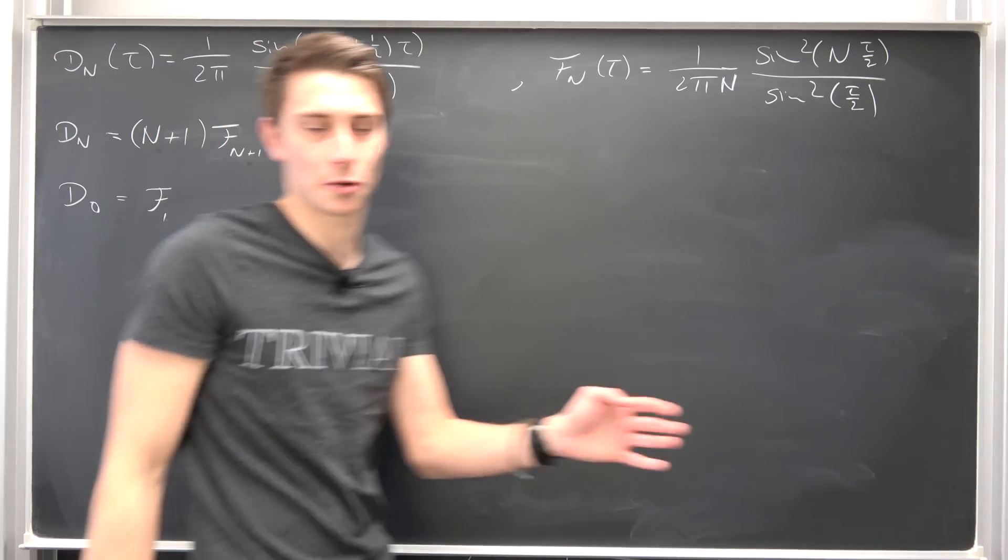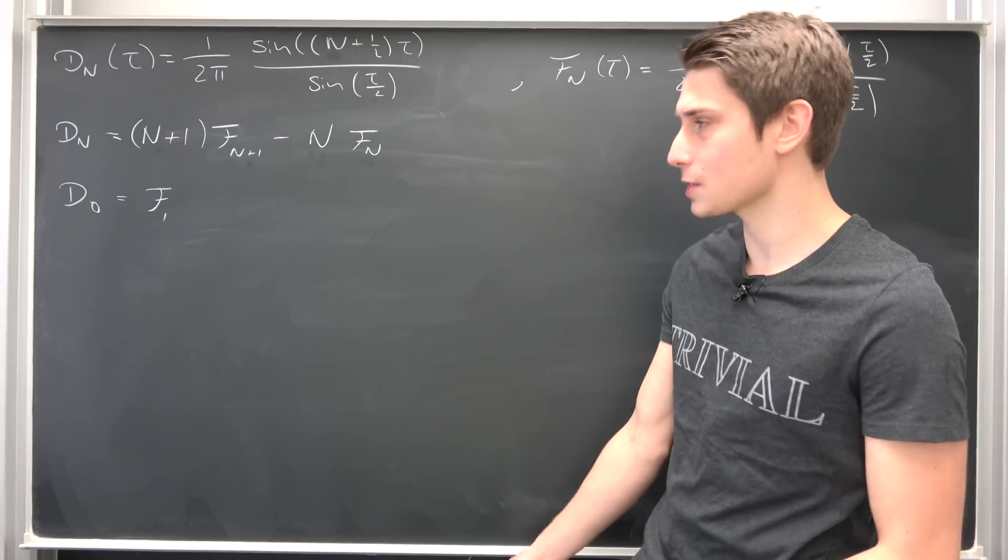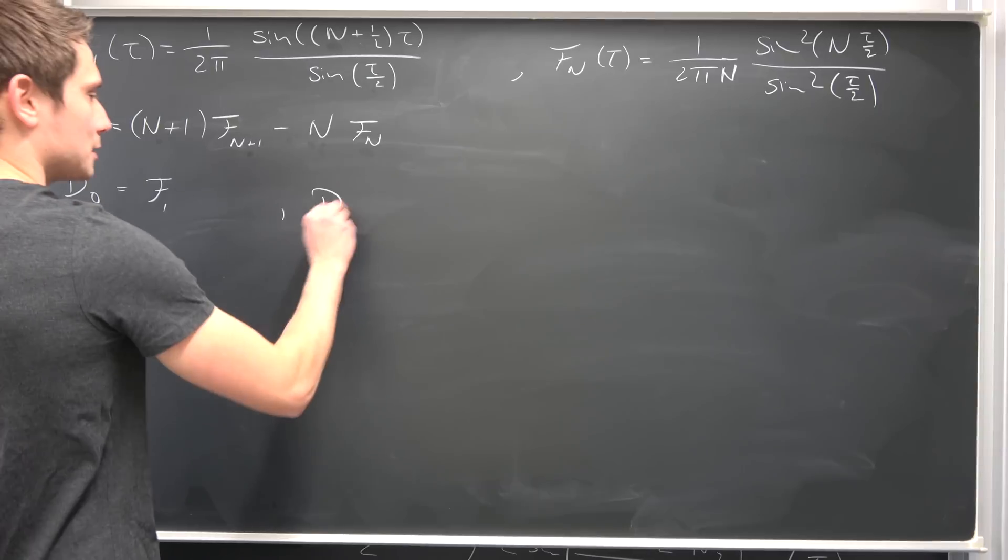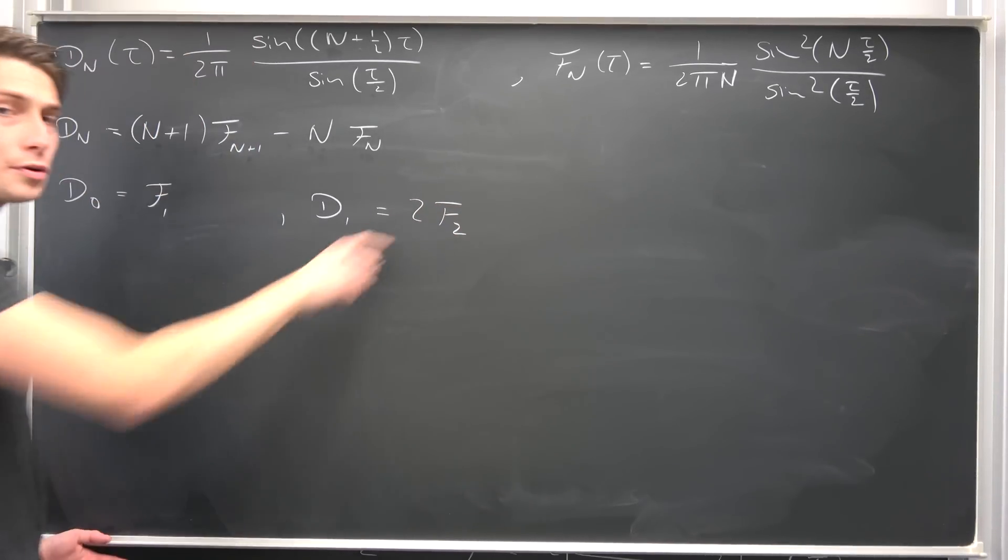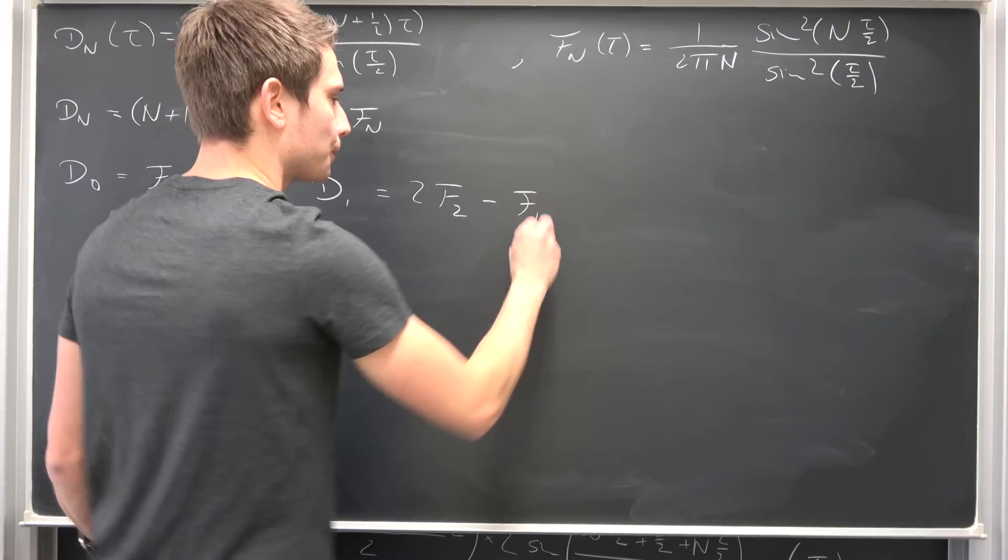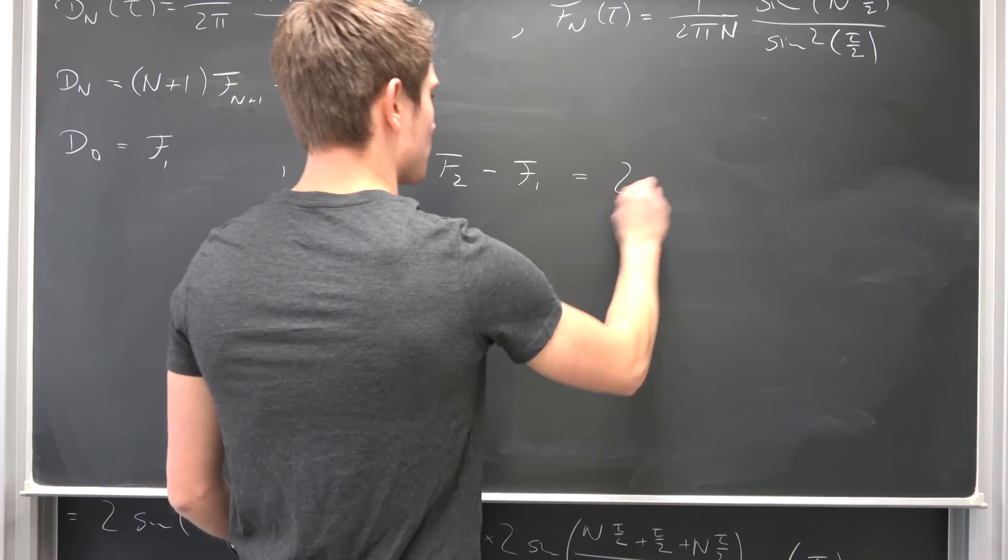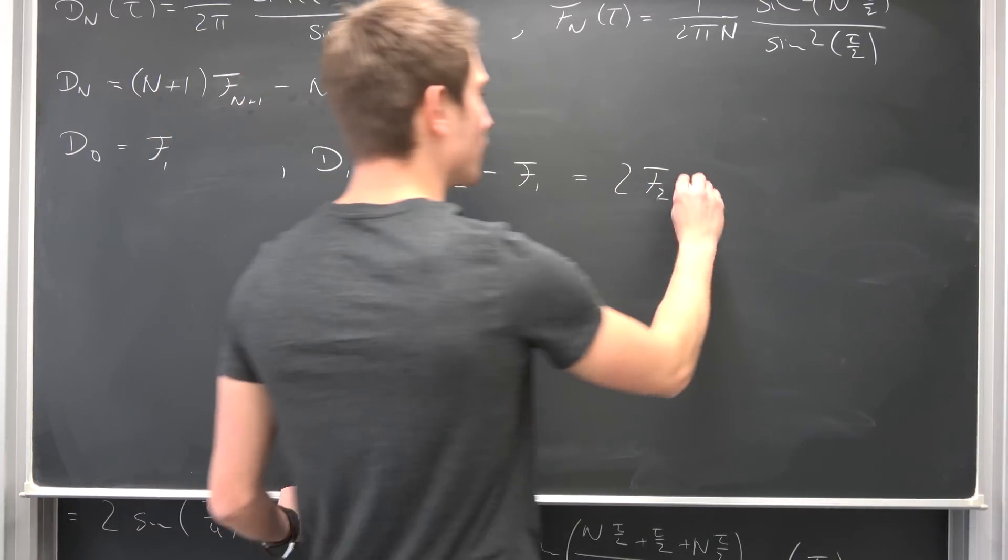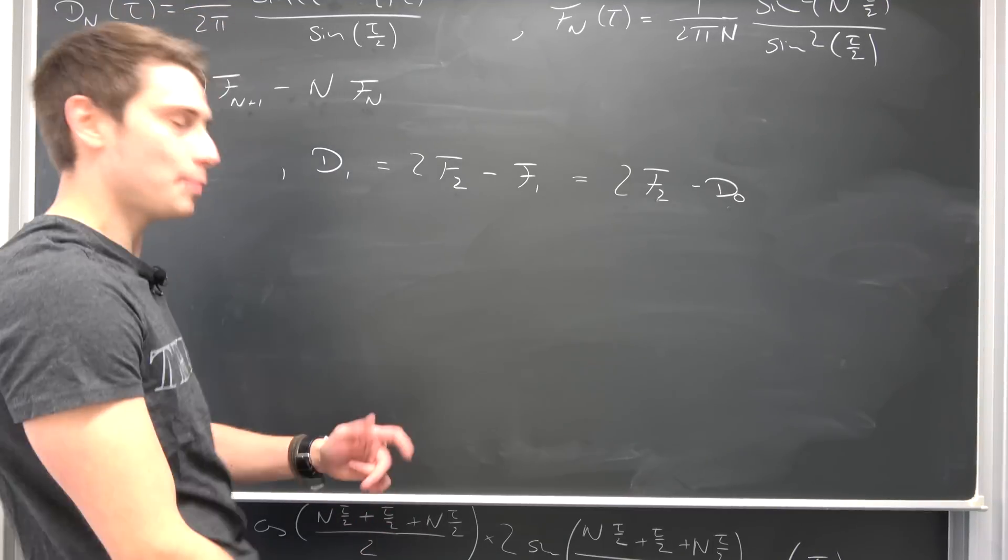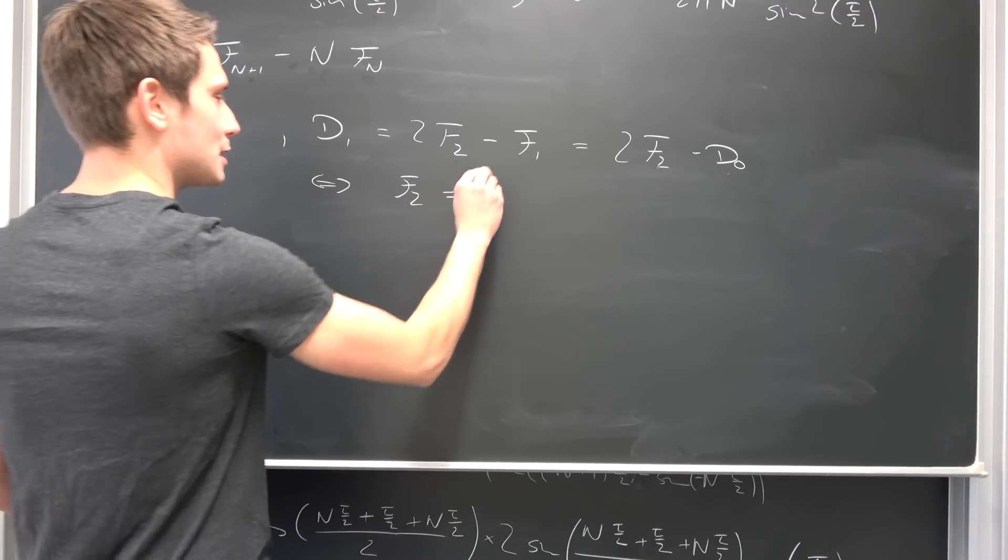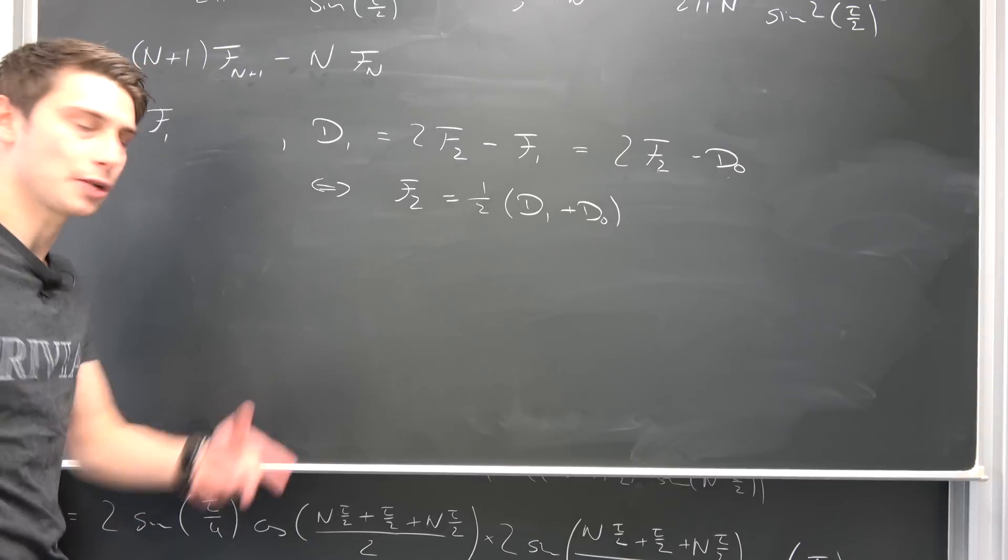I'm terribly sorry, more of a French way to say it probably. The Fejer kernel, no offense to the Hungarian boys in the comments down there. Let's move on, let's see what happens at the Dirichlet kernel of degree 1. Naturally this is giving us 2 times the Fejer kernel of degree 2 minus 1 times the Fejer kernel of degree 1. But the cool thing is we know what the Fejer kernel of degree 1 is, it's nothing but the Dirichlet kernel of degree 0. So this is nothing but 2 times Fejer 2 minus D_0. Why not add D_0 on both sides and divide both sides by 2. So that's equivalent to saying Fejer degree 2 is nothing but 1/2 times (D_1 + D_0).